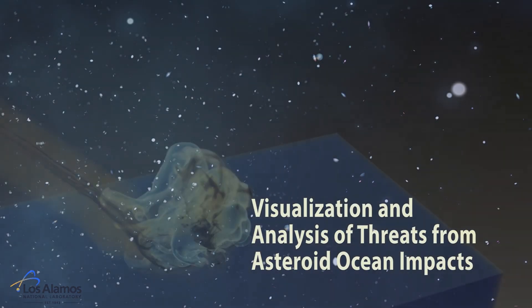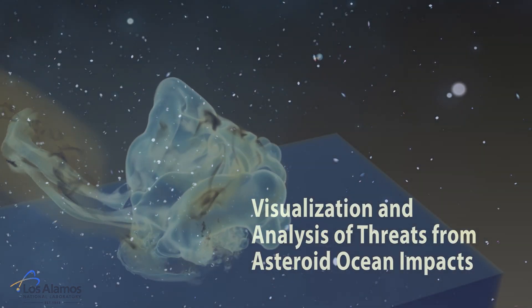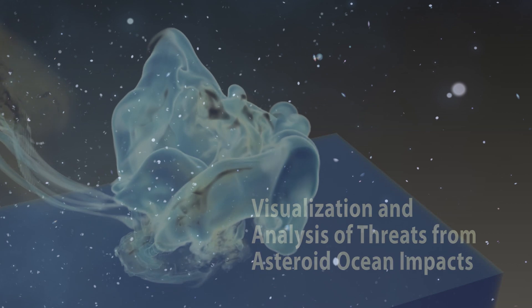NASA is currently tracking 1,717 near-Earth objects that are considered potentially hazardous asteroids due to their size and orbits. Approximately 70% of the Earth's surface is covered by oceans, so an asteroid is most likely to impact the water.